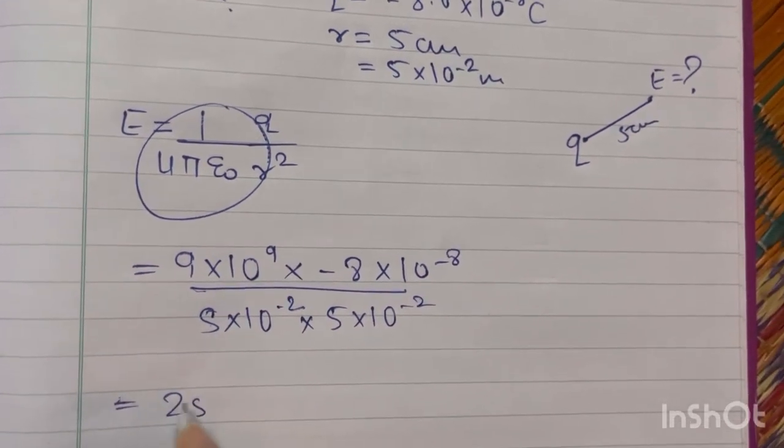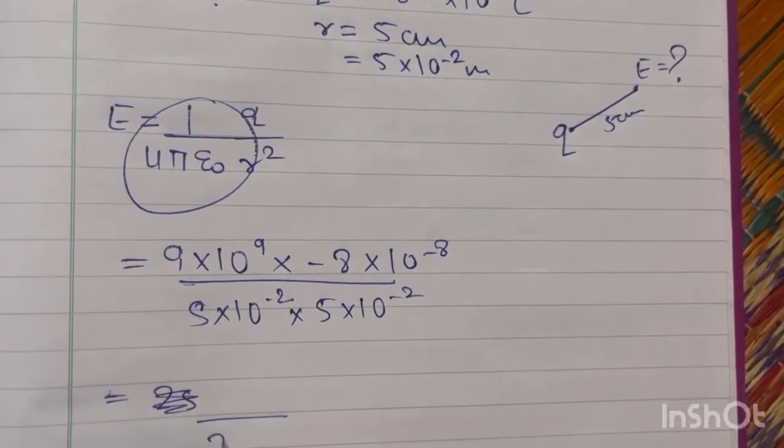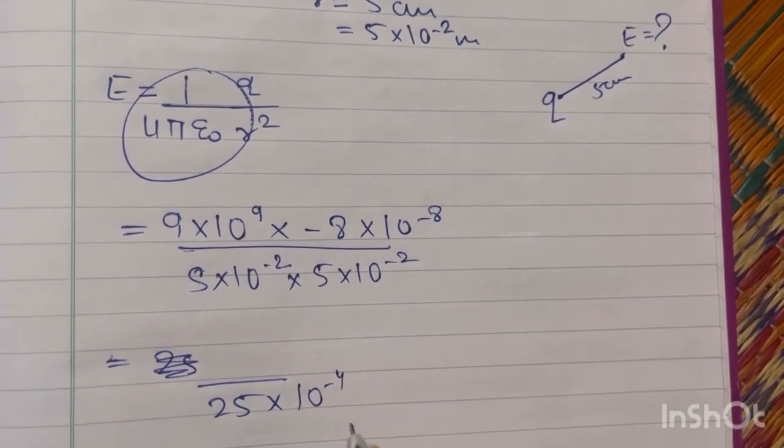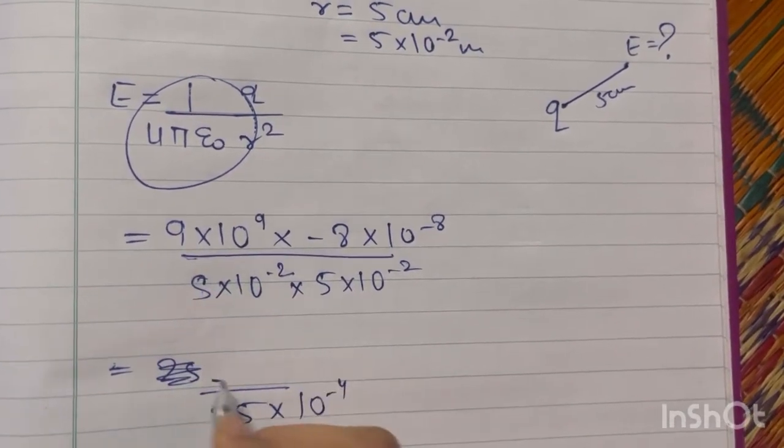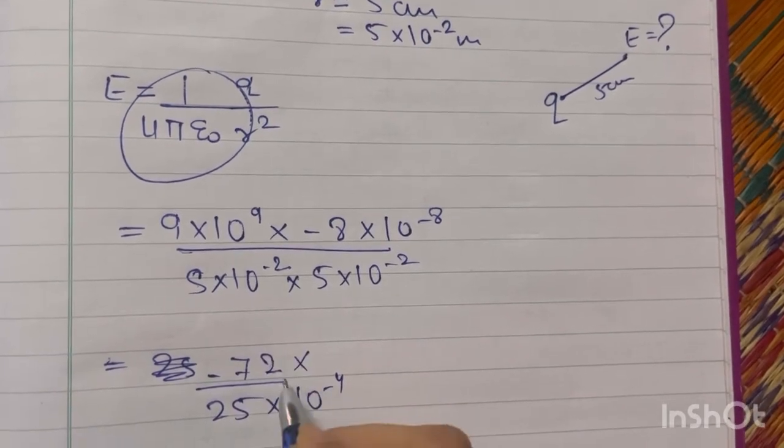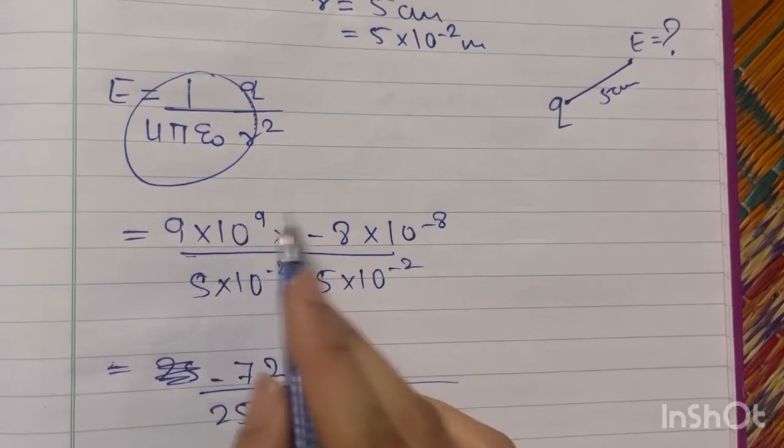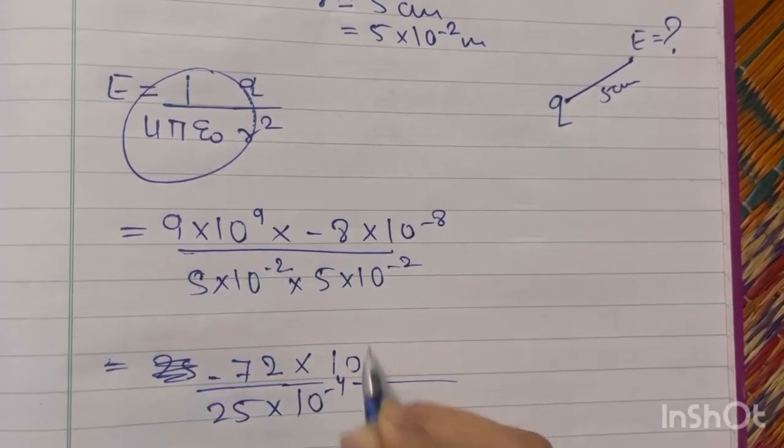5 times 5 is 25 times 10 raised to minus 2. 10 raised to minus 2 will give you 10 raised to minus 4. 8 times 9 is 72, that is minus 72 times 10 raised to 9, and 10 raised to minus 8 will give you 10 raised to 1.